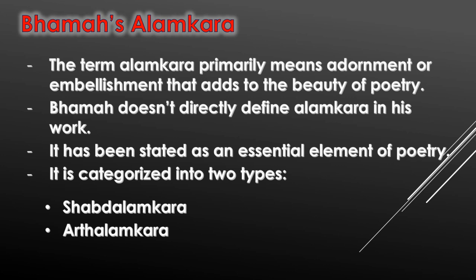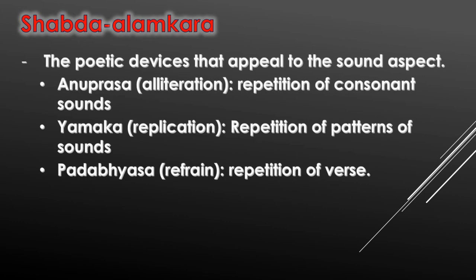He categorized Alamkaras into two types: the first one was Shabda Alamkara and the second one was Artha Alamkara. When it came to Shabda Alamkara, he said that anything that appealed to the sound aspect of poetry was Shabda Alamkara — that is, anything that beautified poetry on the basis of its sound aspect. He stated that there were three major Shabda Alamkaras: the first one being Anupras Alamkara, which is the equivalent of alliteration in English.